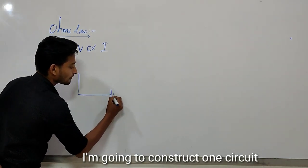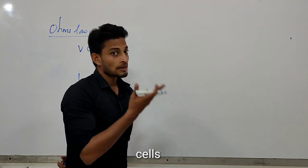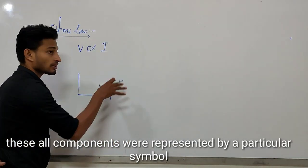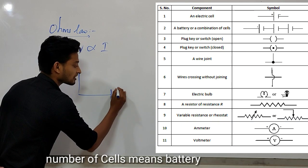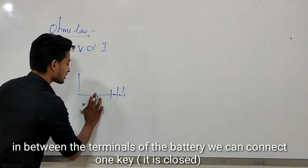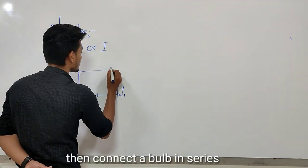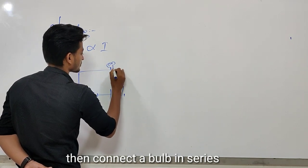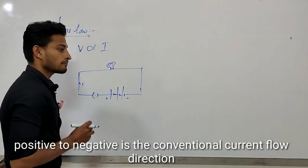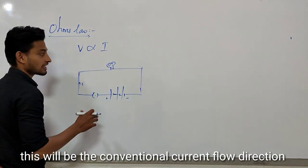You will find many symbols in our book. What is the symbol of the cell, the battery, the resistance, the capacitor, the bulb? I'm going to show you how to connect the cells. We connect a number of cells — three cells — then connect a key. The conventional current direction is positive to negative.